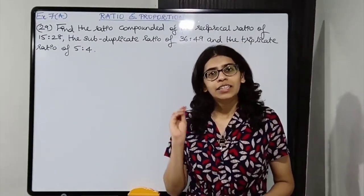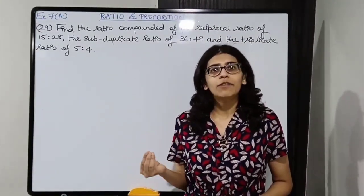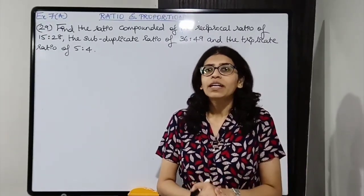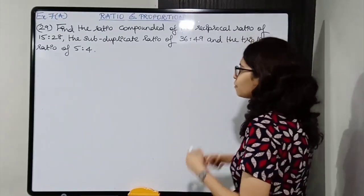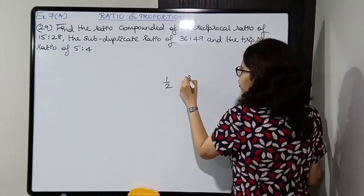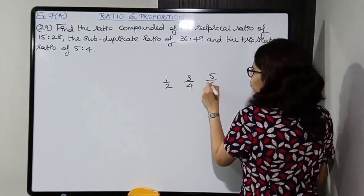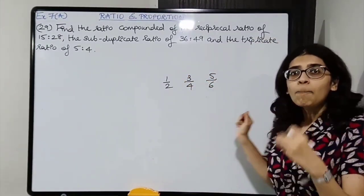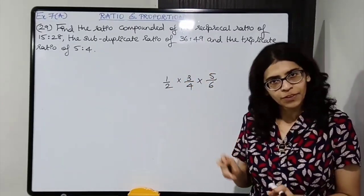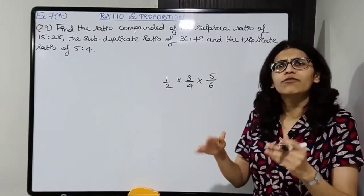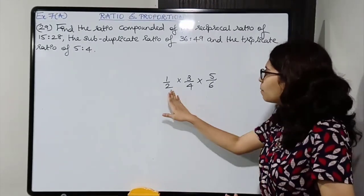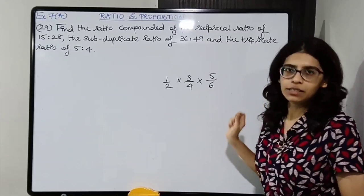There are 3 different ratios and we have to compound those 3 ratios. What do you mean by compounding the 3 ratios? If you have 3 different ratios, say 1 upon 2, 3 upon 4, 5 upon 6 — compounding means multiplying the 3 ratios. There can be 2, 3, 4, or n number of ratios.